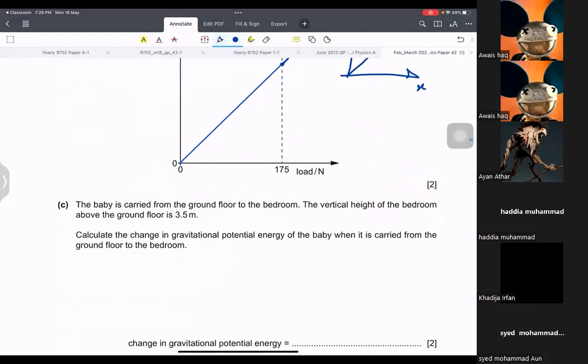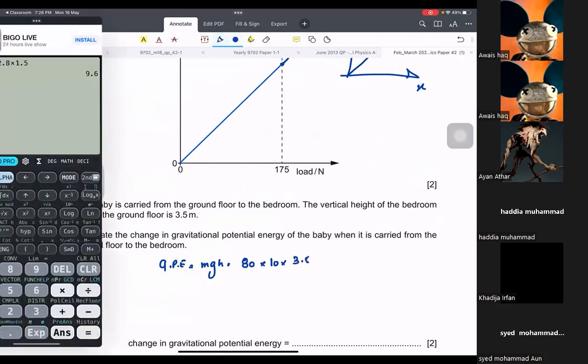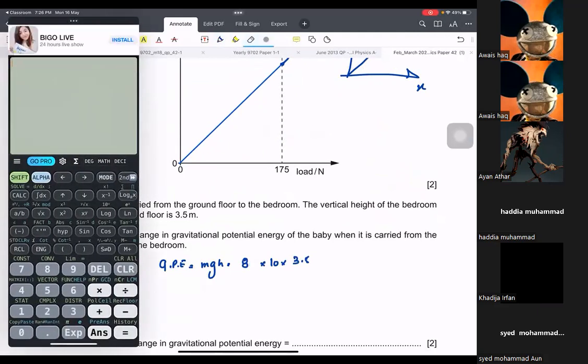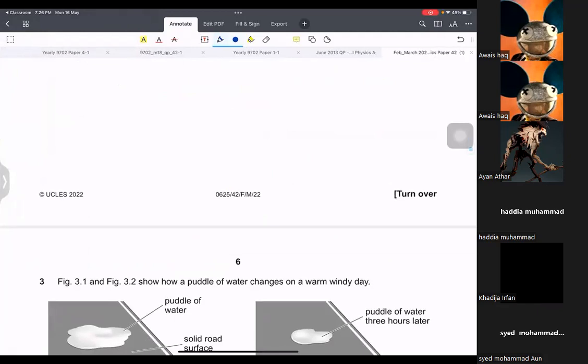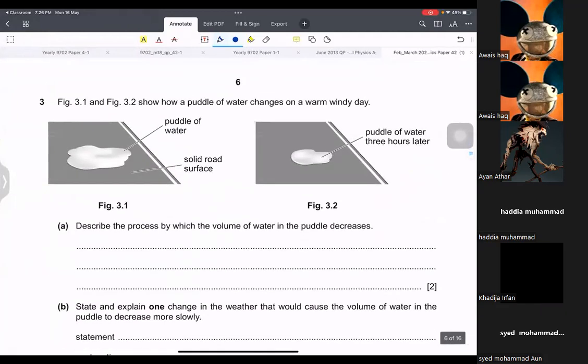The baby is carried from ground floor to bedroom. The vertical height of the bedroom above the ground is 3.5. Calculate change in gravitational potential energy of baby when it is carried from ground floor. GPE is equal to mgh. The mass was 8, this is 10, and the height is 3.5. That's going to be 280 joules. That's the end. That's pretty simple.